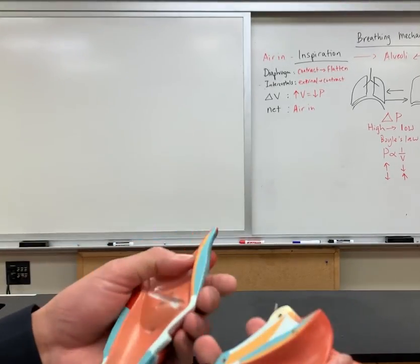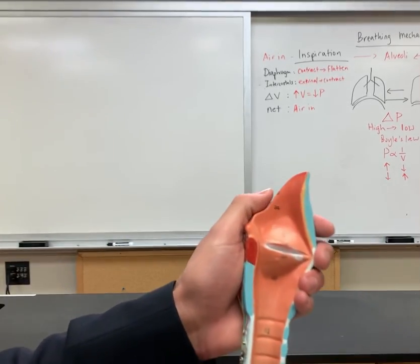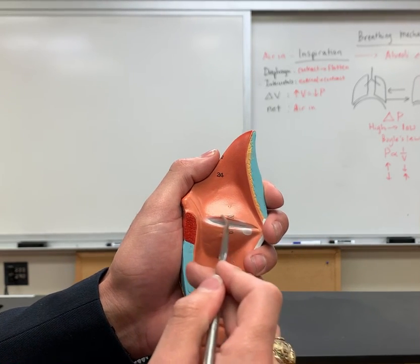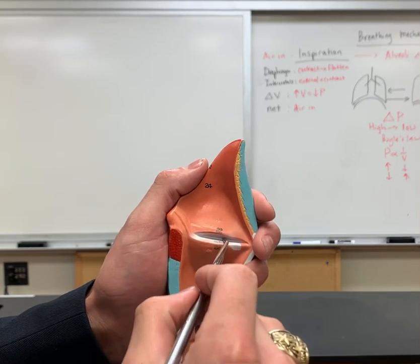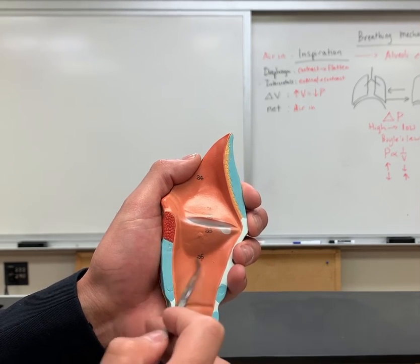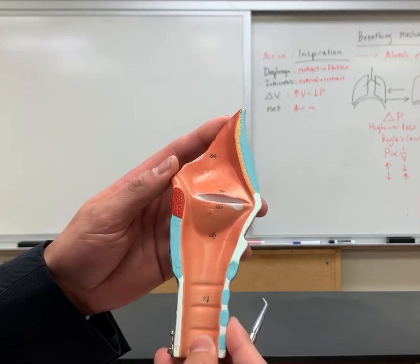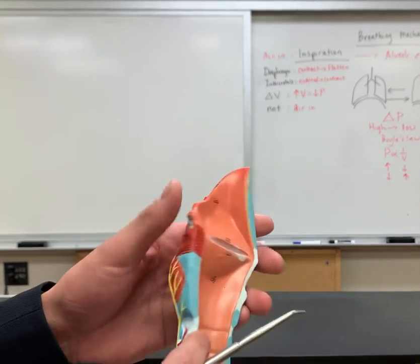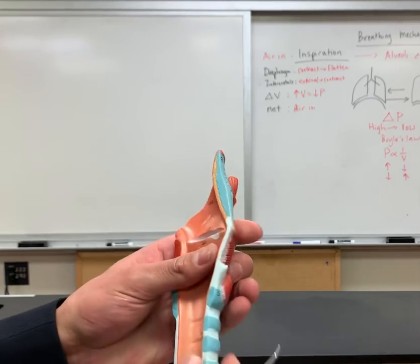Now we can take this off and look at some of the structures that are here on the inside. Number 22 is the false vocal cords. Number 23 is the true vocal cords. And number 25 is the ventricle of the larynx. Number 26 is the vocalis muscle. Number 27 is the mucous membrane of the trachea. And just to point out, this is the epiglottis there.